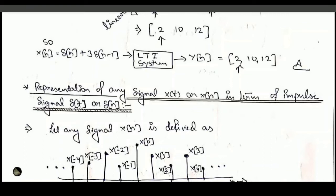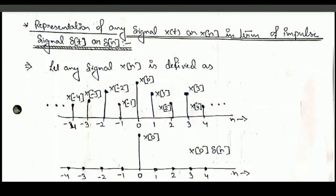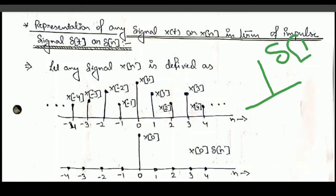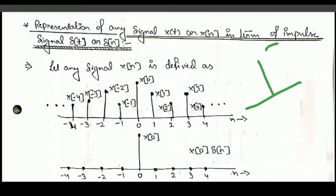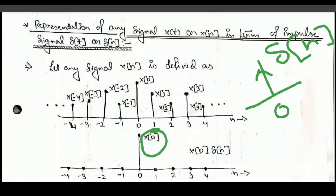The next topic is the representation of any signal in terms of impulse signals. Any signal can be represented through the impulse signal because representation in terms of δ[n] is very convenient for analysis and for generating a response, as we discussed in the previous question. Let any given sequence be given, with magnitudes listed at respective positions.